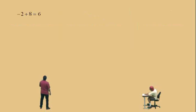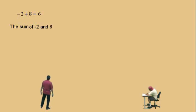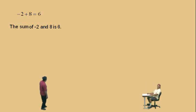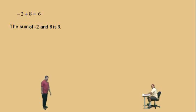Let's do another one. This is what, Charlie? Sum. It's the sum of what? Negative 2 and 8. That's right. Now, equals — what is the word statement for equals? Is. That's right. And is what? Six. Six. That's right. So this is the sum of negative 2 and 8, which is 6. Very nice, Charlie.